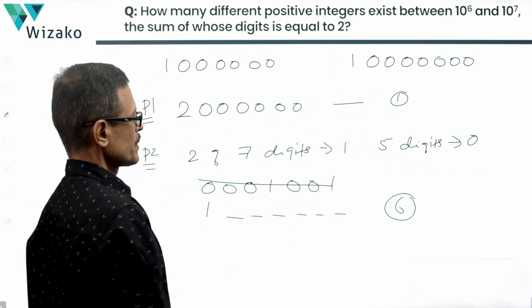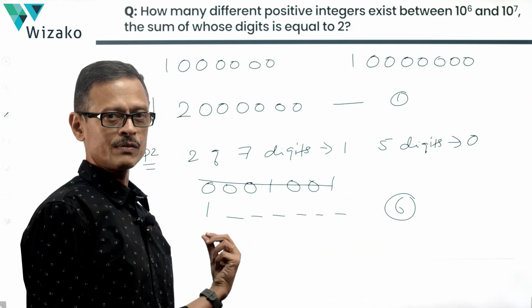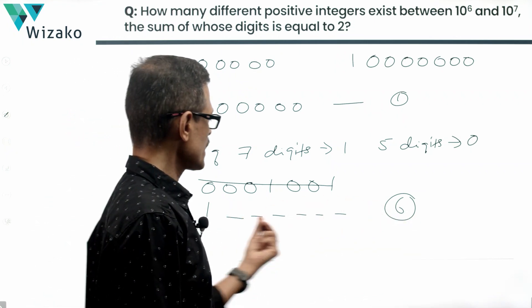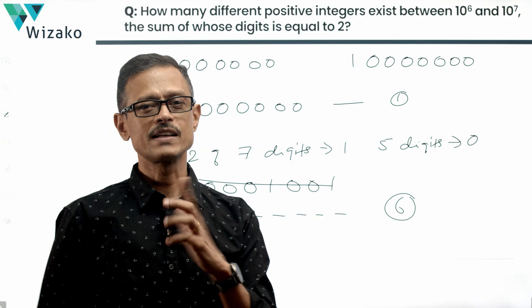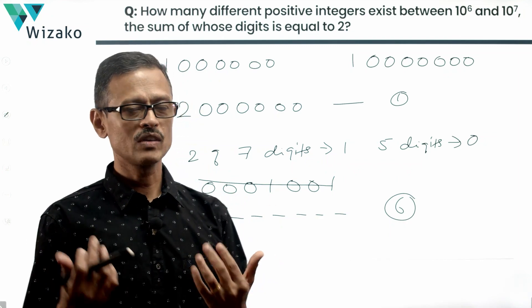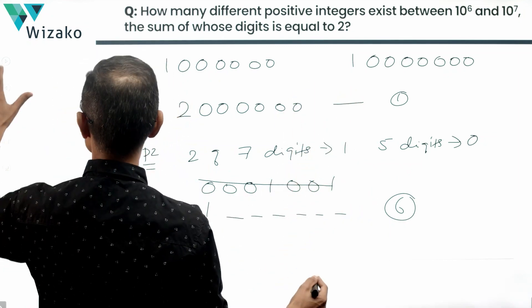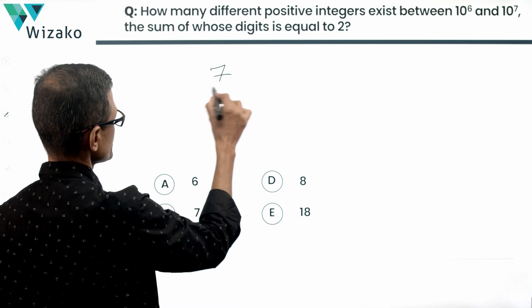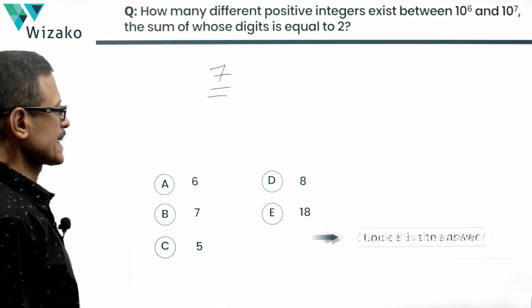So 1 number, which is 2 million, and then 6 numbers which start with a 1 and have 1 in one of these 6 places and the remaining 5 places being 0. So how many total numbers will we have? 1 plus 6, that's equal to a total of 7 such numbers exist. Answer option B is the correct answer to this question.